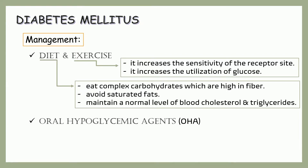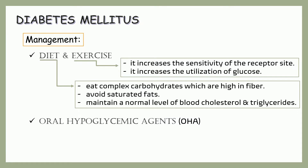Next is oral hypoglycemic agents — this is an oral medication used to lower the blood glucose level. Finally is insulin therapy, which is common in patients with type 1 DM. It will be needed if your blood glucose level is still high even if you are taking oral hypoglycemic agents together with diet and exercise. Insulin facilitates the entry of glucose into the cells so that it can be used as energy.